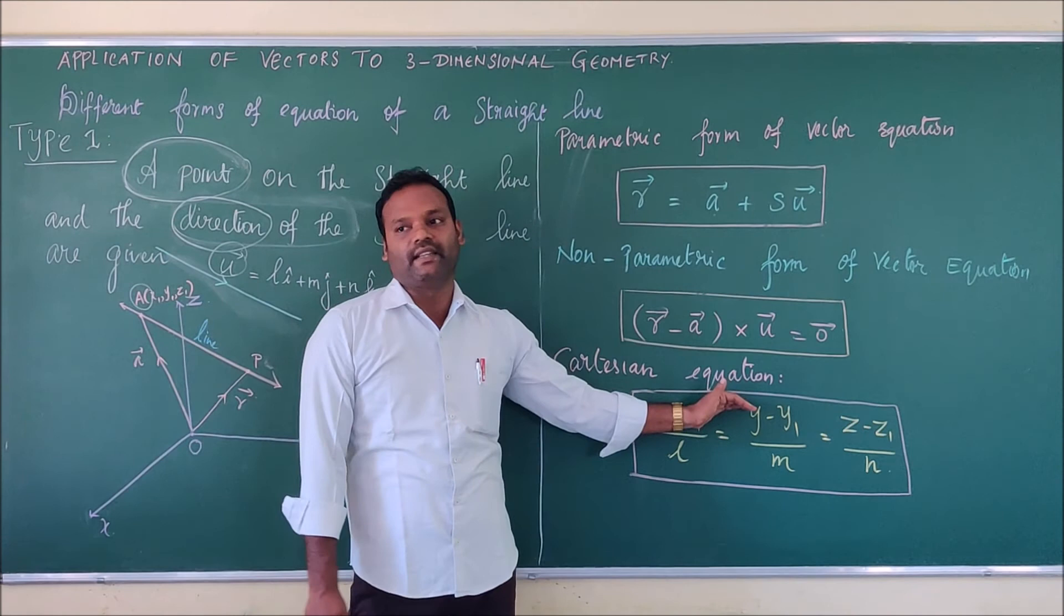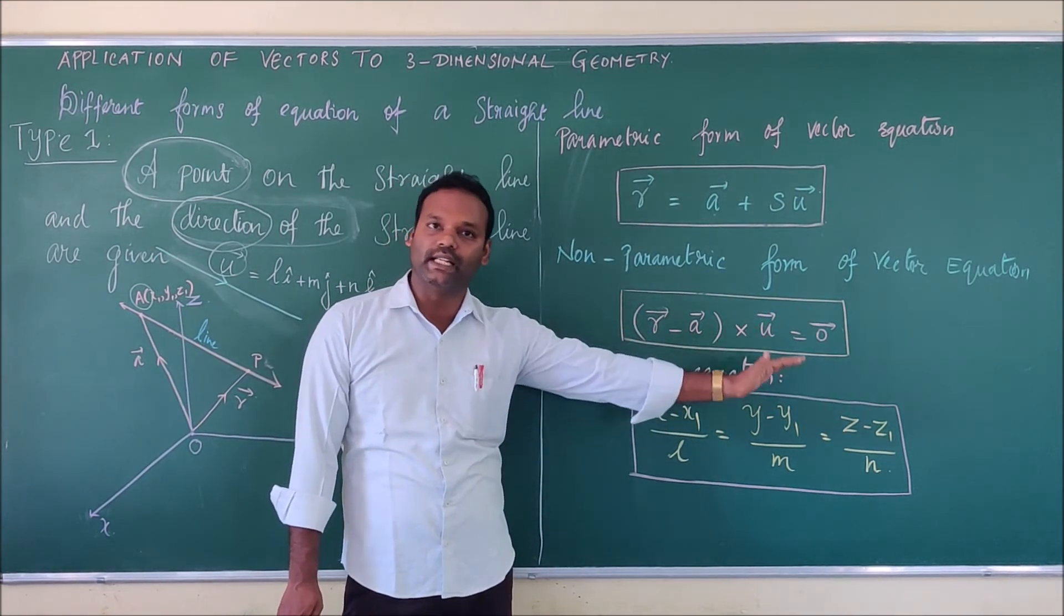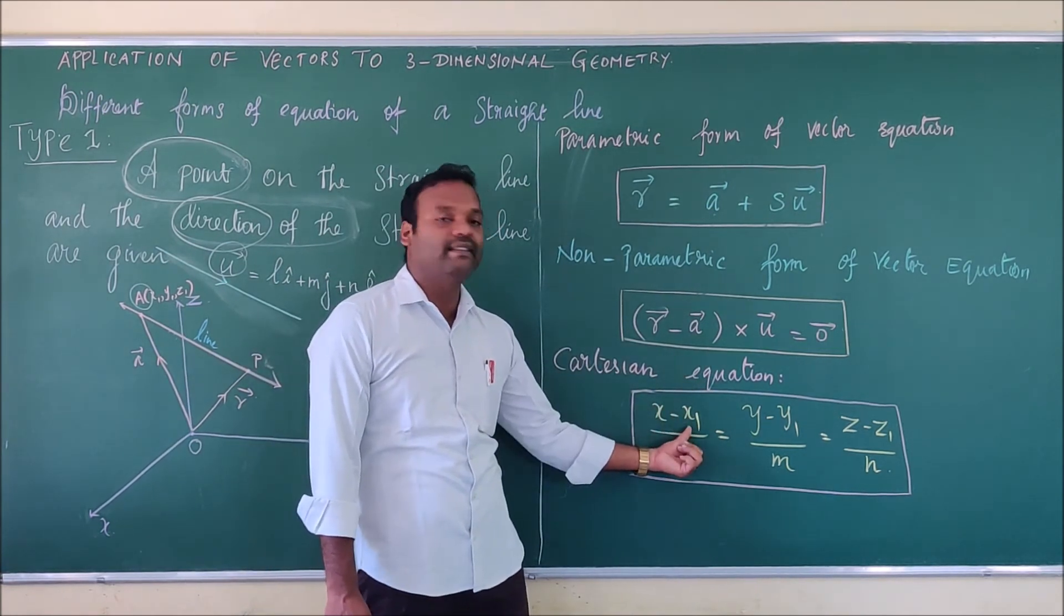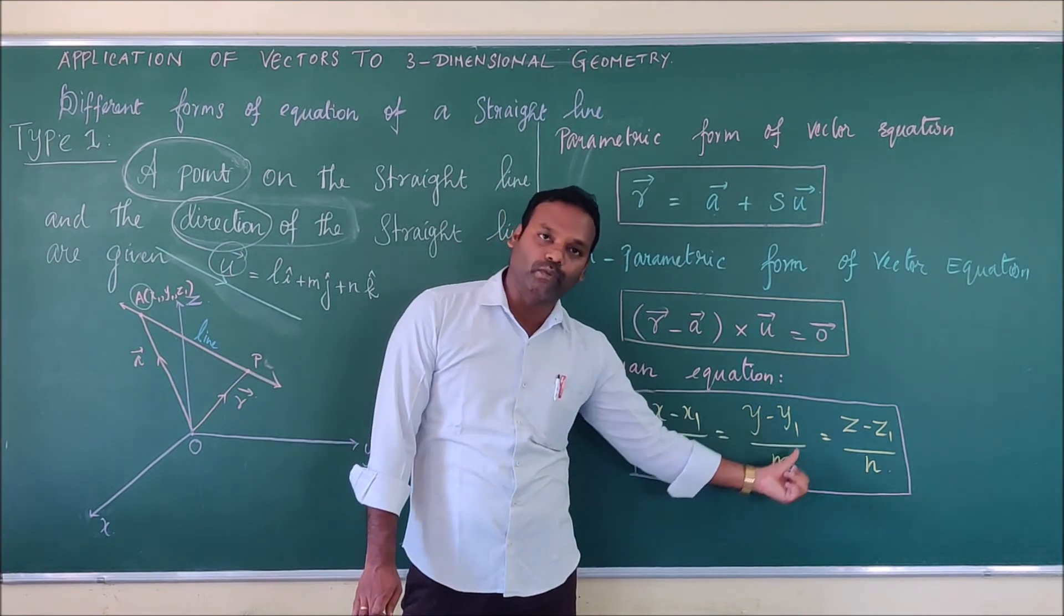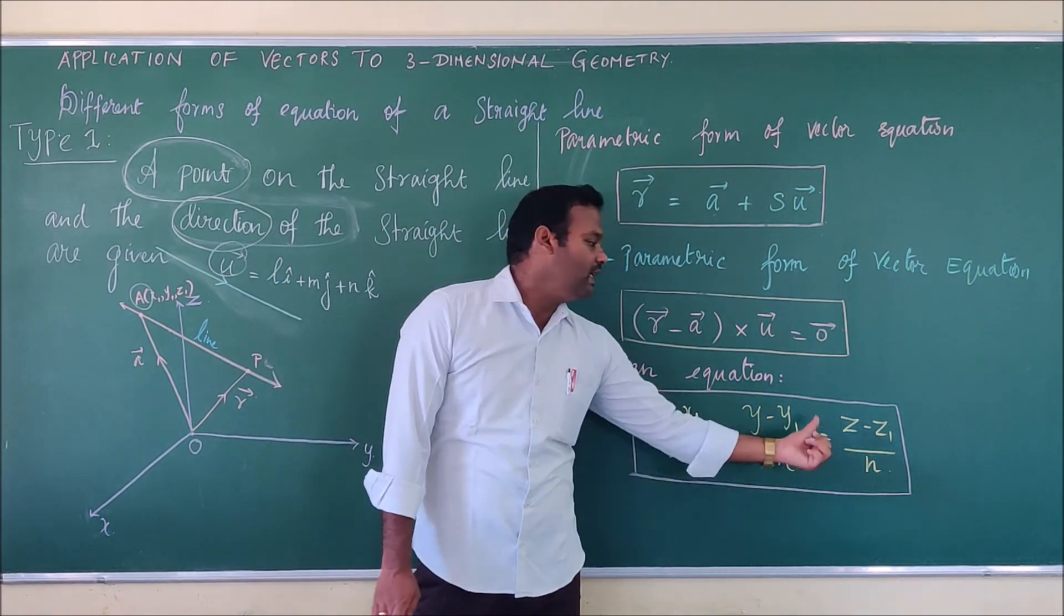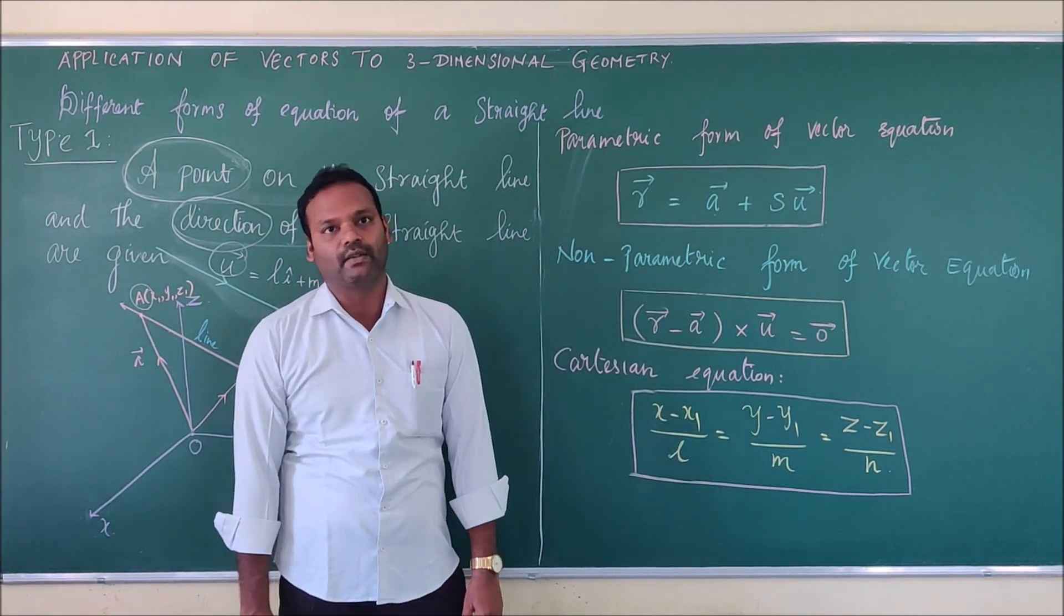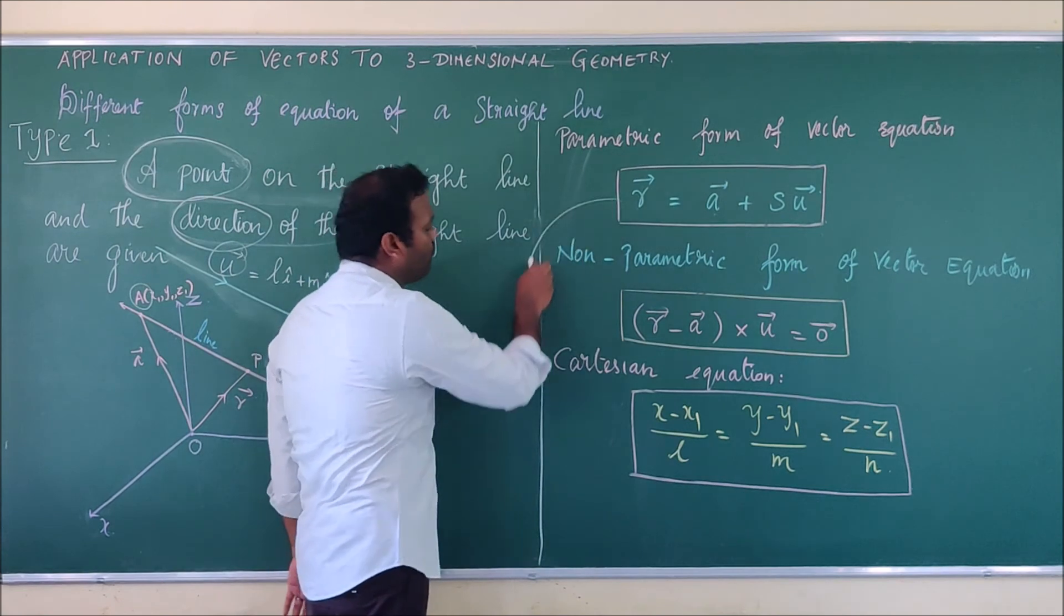Next, Cartesian equation. As I have mentioned earlier, it will have only x, y and z. The Cartesian equation is x minus x1 divided by L equal to y minus y1 divided by m equal to z minus z1 divided by n. You should be familiar with these two forms.